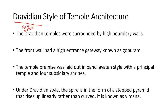We discussed the development of temple architecture in south India especially during the Pallavas — Nandi Varman, Rajasimha Varman. Now we will discuss the temple style of architecture in south India, that is Dravidian style. This Dravidian style of architecture was developed during the Cholas' time and reached its peak or zenith level during the Cholas. Some of the features of Dravidian style of architecture were taken from Pallava style.